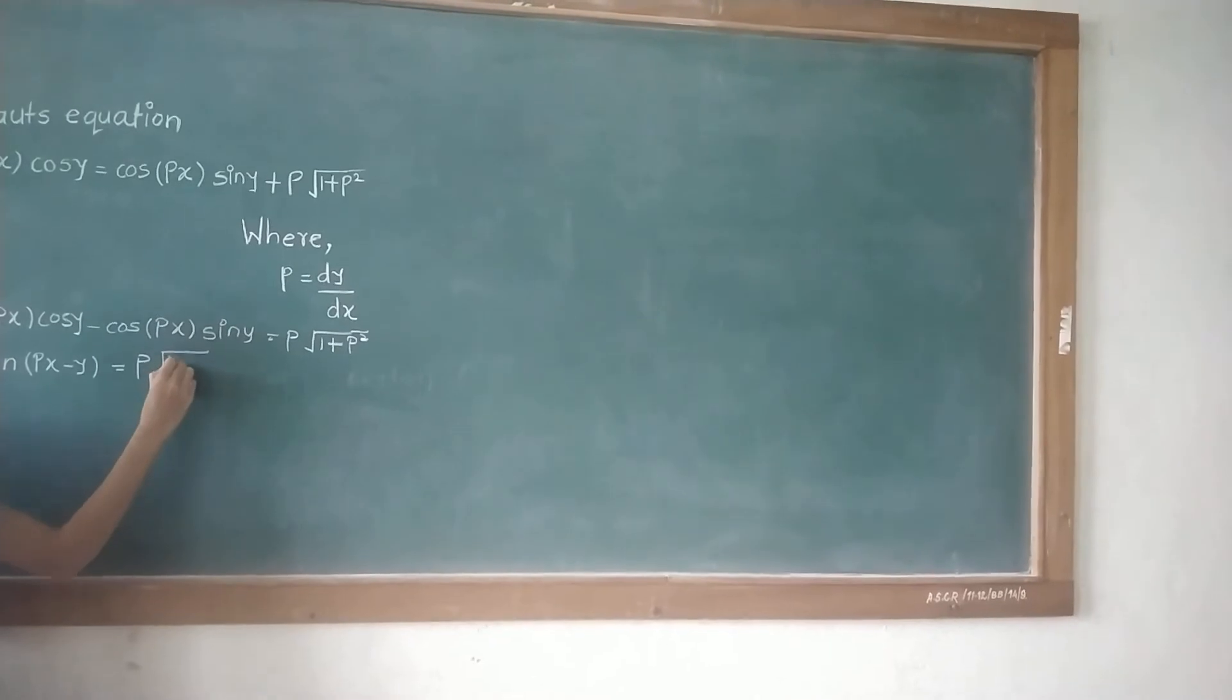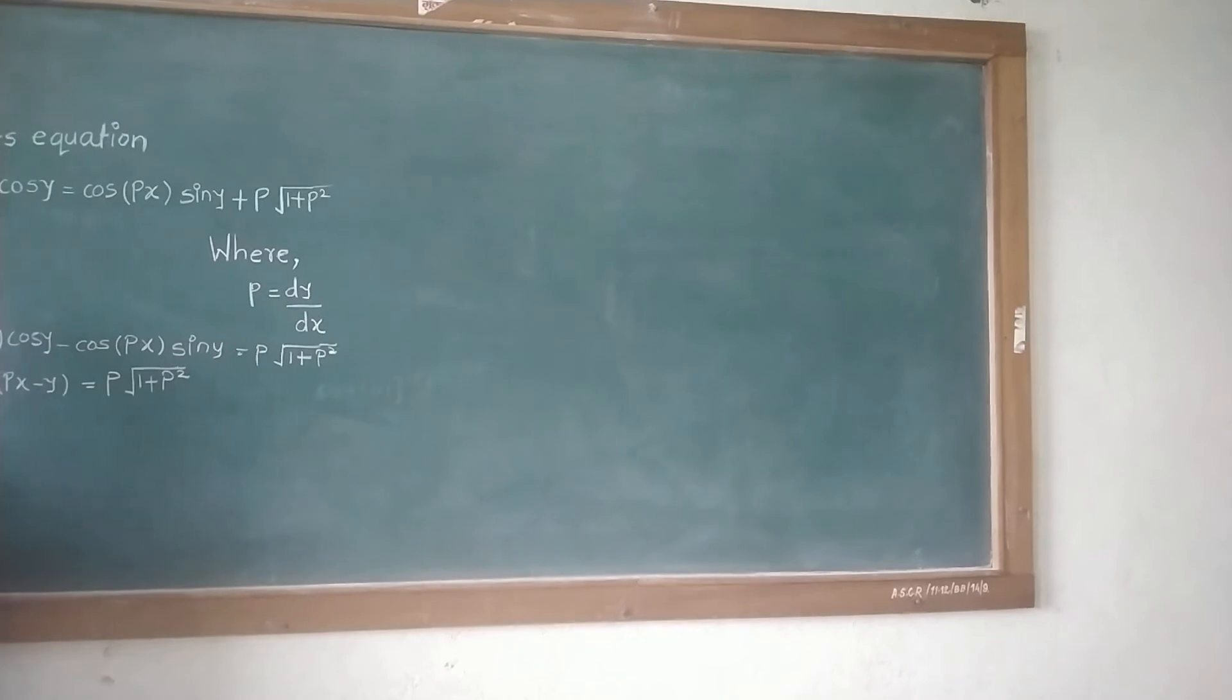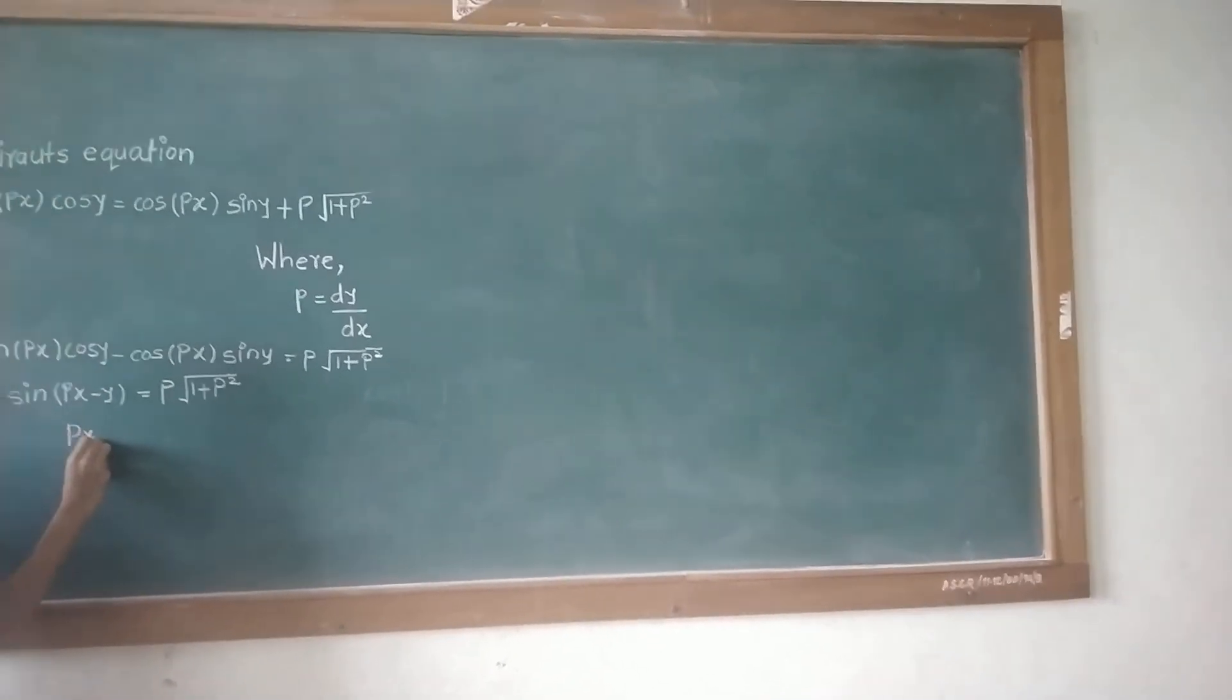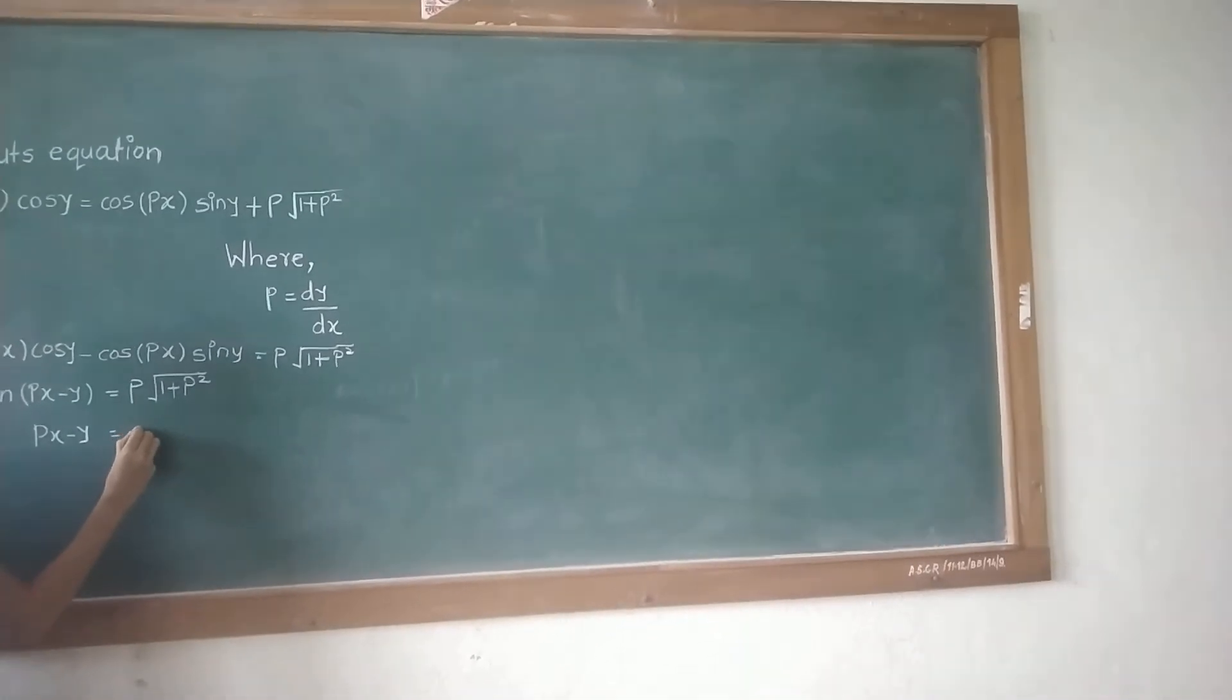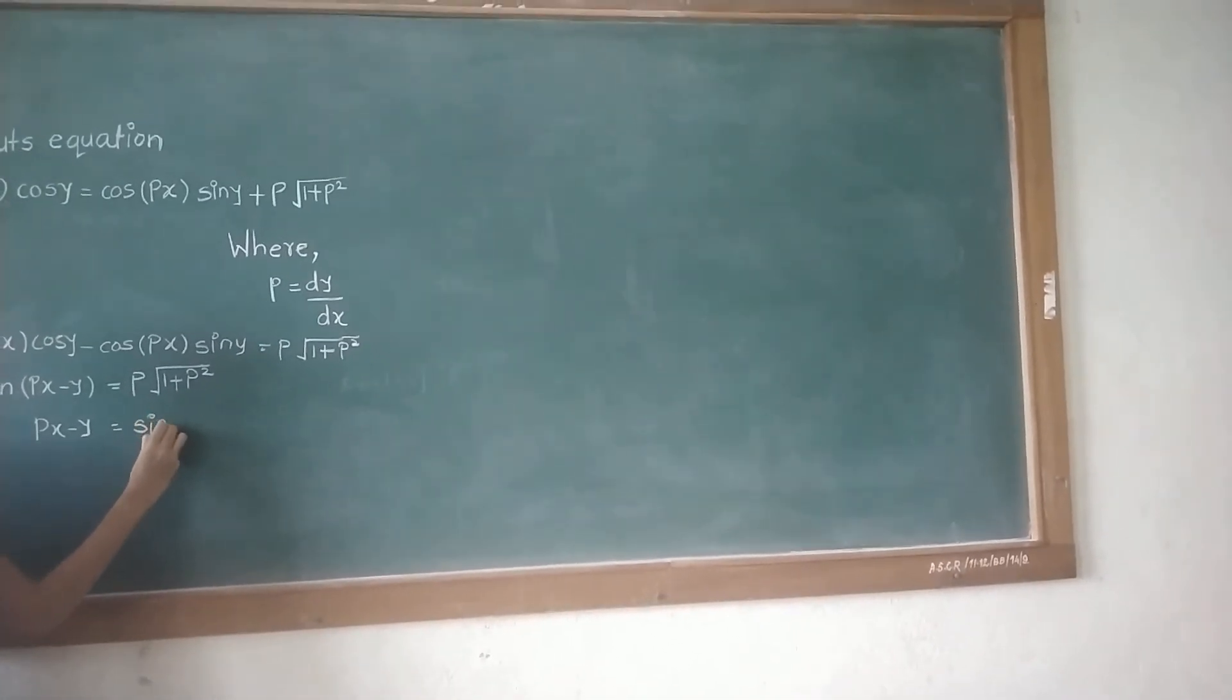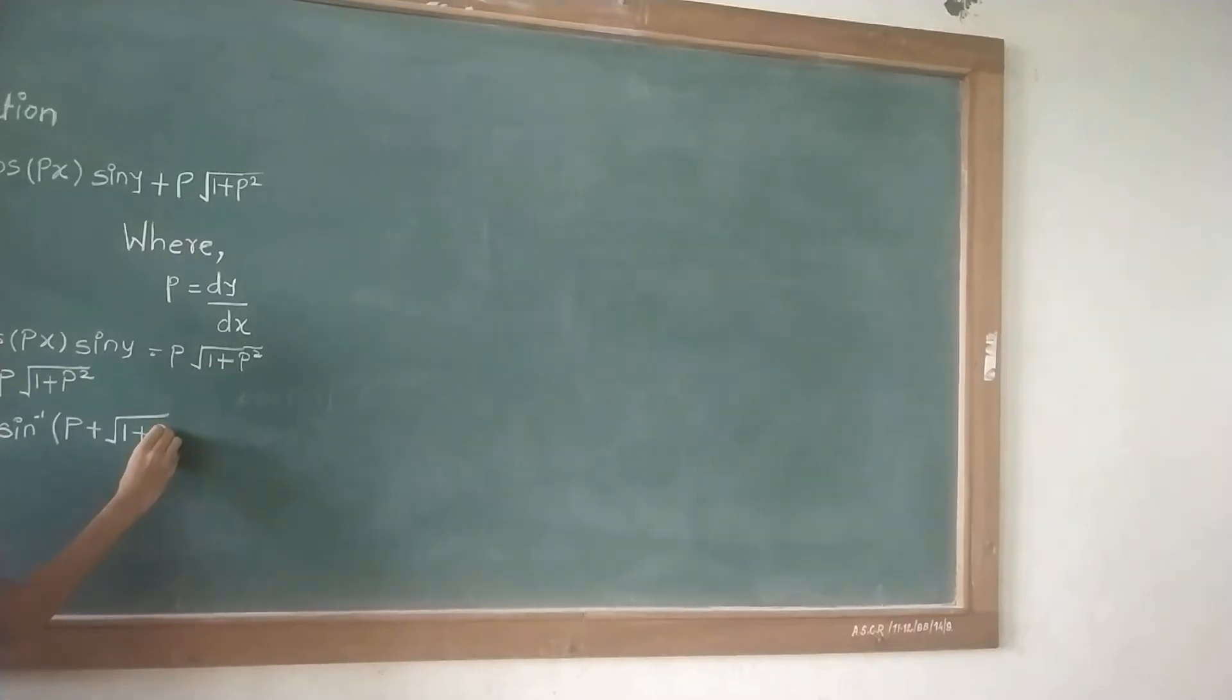We can further write this equation as sin(px - y), since it is the expansion of sin(px - y). We have a formula sin(a - b), and the term on the left side, which is the expansion of sin(px - y), equals p√(1+p²).